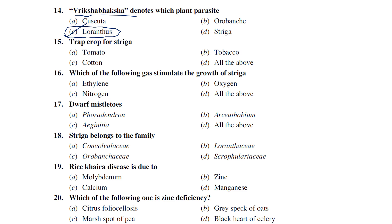For Striga management in sorghum, cotton can be recommended as a trap crop. Among ethylene, oxygen, and nitrogen, ethylene gas helps stimulate the growth of Striga.